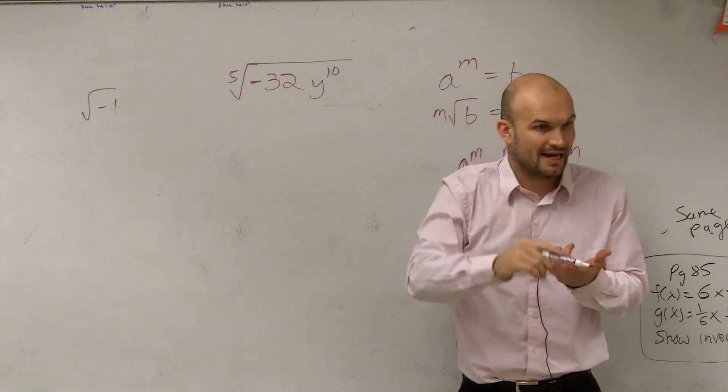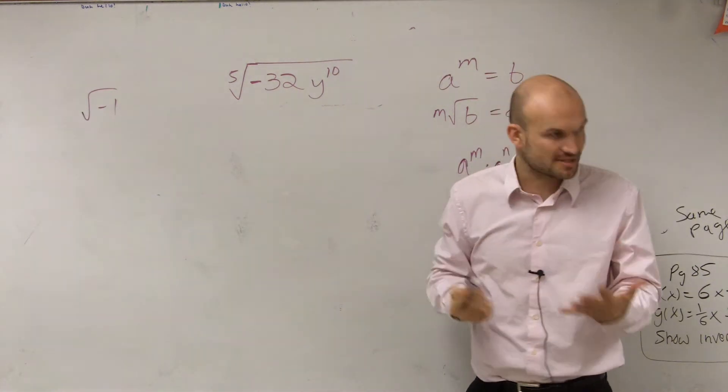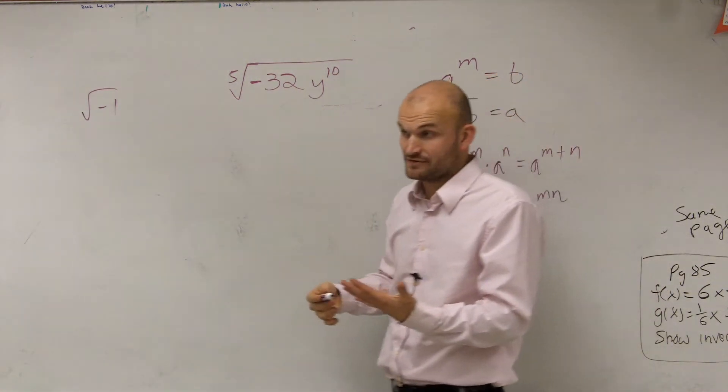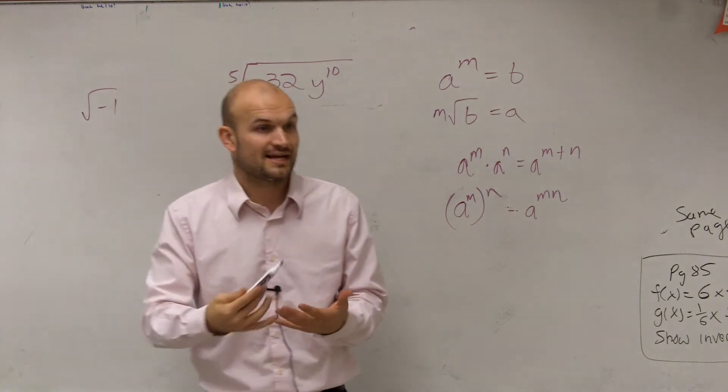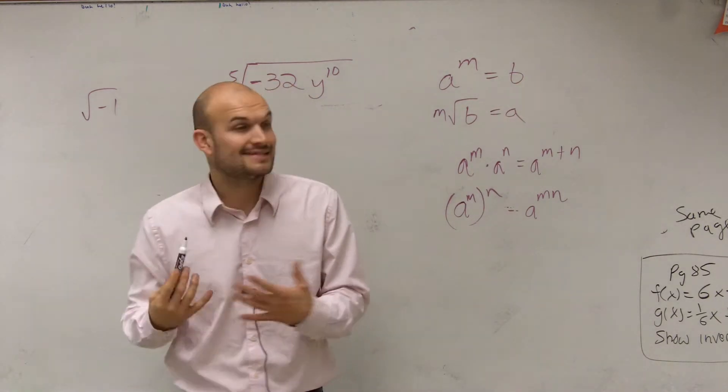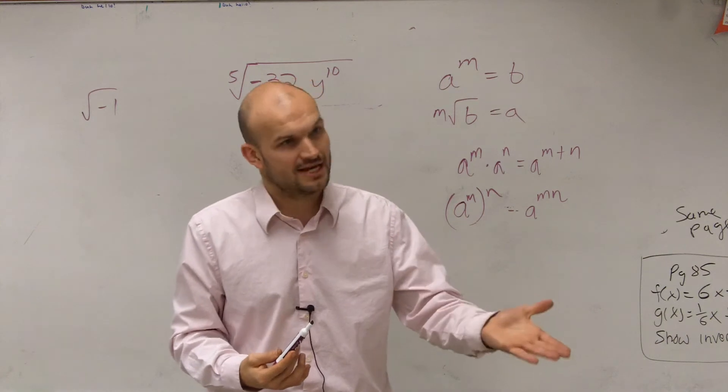Well, think about it. Negative 2 times negative 2 is positive 4, times negative 2 is negative 8, times negative 2 is positive 16, and times negative 2 is going to give you negative 32.